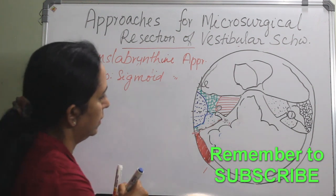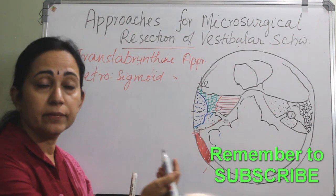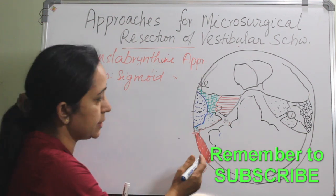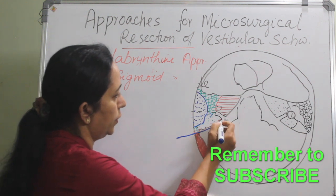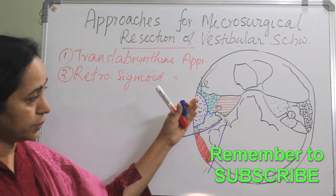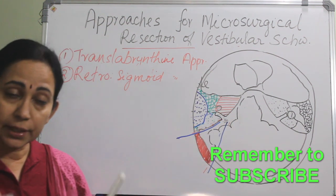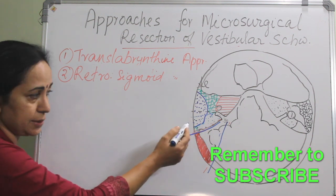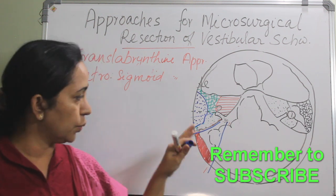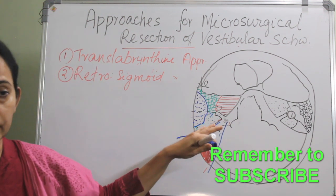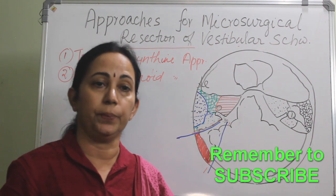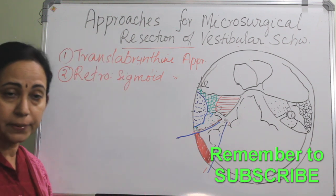In this we are getting a very panoramic view of the CP angle. The door of entry will be post-aural incision. This is a corridor and we are reaching the CP angle and also the medial two-third of the internal acoustic meatus. We are not at all going into the temporal bone structures, not touching the inner ear or the middle ear, so the hearing will be preserved. We are getting a view of the CP angle from the foramen magnum inferiorly to the tentorium superiorly, while preserving hearing.